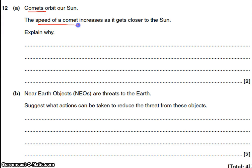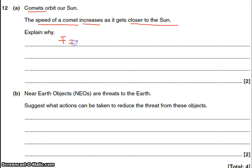Comets orbit the sun, and the speed of a comet increases as it gets closer to the sun. The reason is straightforward: the closer to the sun you are, the stronger the gravitational force. The greater gravitational force means the comet accelerates as it comes close to the sun. This follows the equation F = ma: as the force increases due to getting closer to the sun, the gravitational force increases and it accelerates.